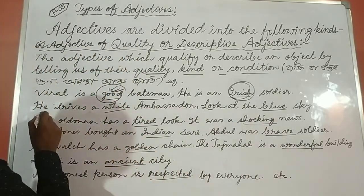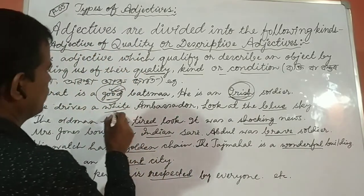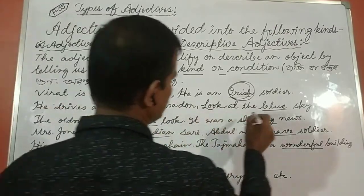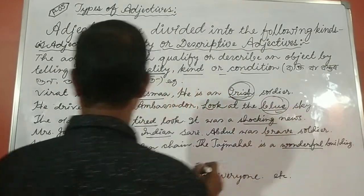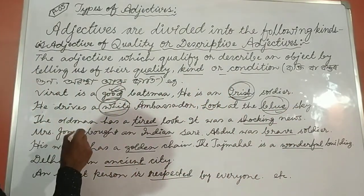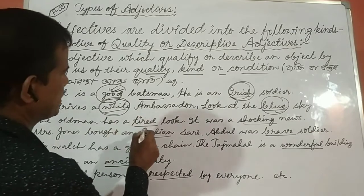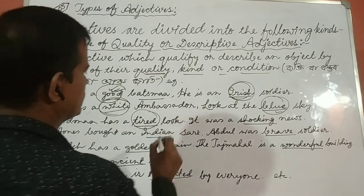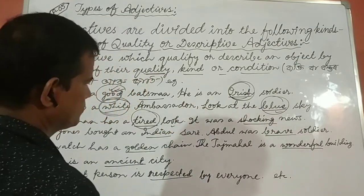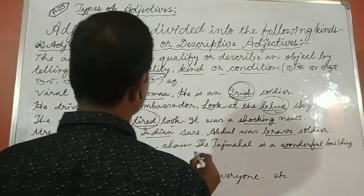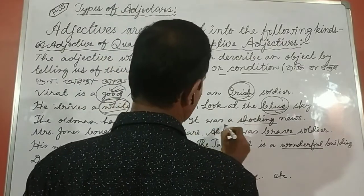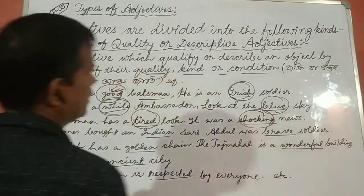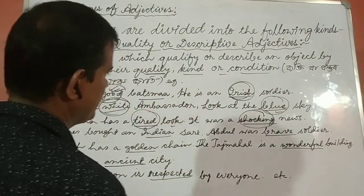He drives a white ambassador — white is the adjective. Look at the blue sky. The old man has a tired look. He drives a white ambassador — the adjective of quality. For example: it was a shocking news — shocking is the descriptive adjective.